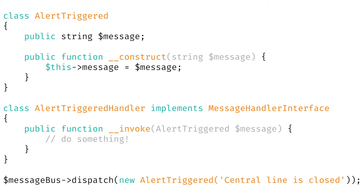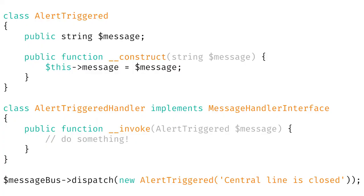First you have to create a class which is the message that you want to send. Here I'll use an example: I have a back office, there's a big red button, and the admin will click that button to send an alert — for example, that the central line is closed and we need to publish that on Twitter. So I have a class, an object that represents my message. I can have as many properties as I want, and I have a handler. The handler is where I put the code that needs to run whenever the event is dispatched. In my controller, whenever the button is clicked, I use the message bus to dispatch the message.